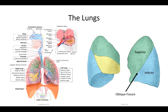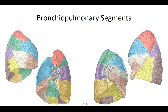In the right lung an oblique fissure also distinguishes the inferior lobe. However, a transverse fissure further distinguishes an additional middle lobe from the superior lobe above. The secondary lobar segments will further subdivide into tertiary bronchial pulmonary segments. In the left lung there are four each in the superior and inferior lobes. On the right side we define three segments in the superior lobe, two in the middle, and five in the inferior lobe.